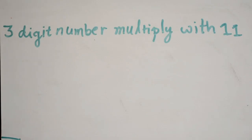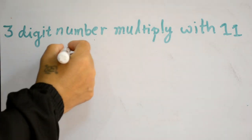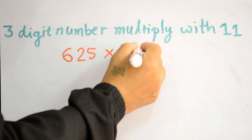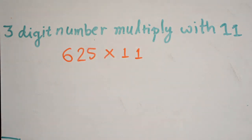Hi friends, today we will learn a math trick: three-digit number multiplication with 11. Look at this example, 625 times 11. How can we multiply this quickly? First, we write the...